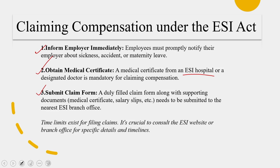It is crucial to consult the ESI website or branch office for specific details and timelines. As a word of caution, it is prudent to consult the official resources of the Employees State Insurance Corporation (ESIC) and also seek guidance from your employer's human resource department. This ensures you have the most up-to-date information and correct forms specific to your claim type. The Ministry of Labour and Employment website often provides links to relevant ESI resources for your region.